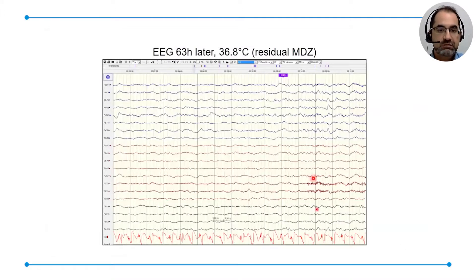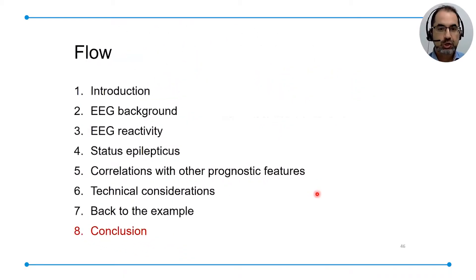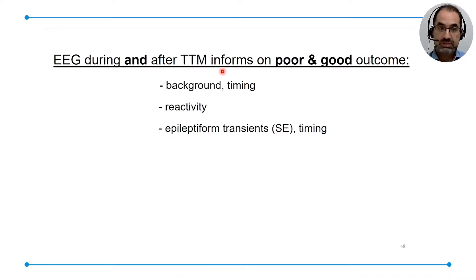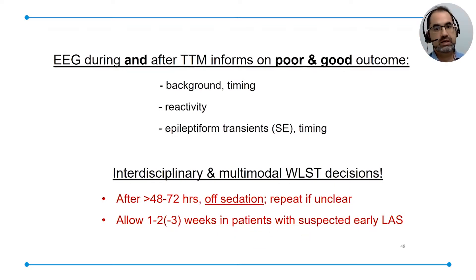For the time being, performing an EEG — either continuous or spot — is important, and it should be done during and after TTM because it can inform in both directions. You look at these items: background continuity, reactivity, epileptiform patterns, and stimulus-induced responses. You must always be interdisciplinary and multimodal in your decision. Wait long enough and allow several weeks for the subgroup of patients who may awaken despite status epilepticus or myoclonus.